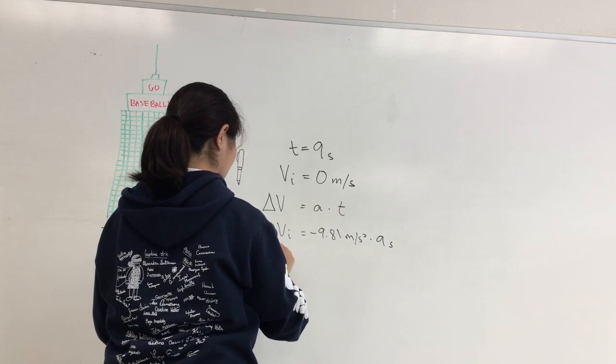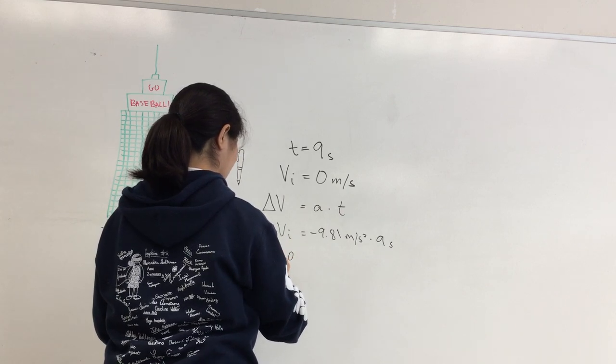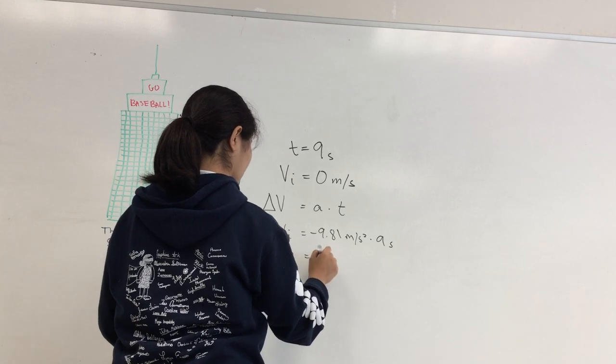Once multiplied, it equals about negative 88 meters per second. That is the final velocity.